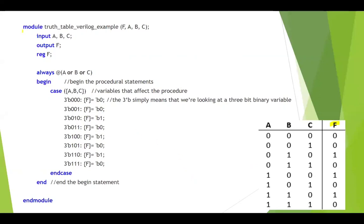We want to use the procedural description. We add the module in Verilog. We don't use primitives here. We add the output and semicolon. The inputs will be A, B, C and the output will be F. In procedural description, outputs driven by an always block must be declared as registered — as a storage element.